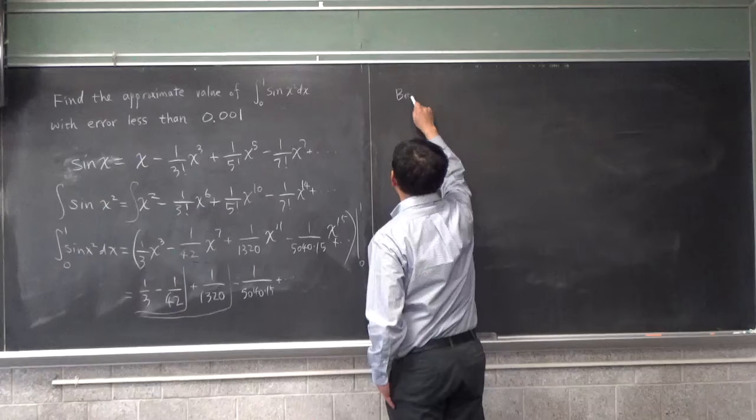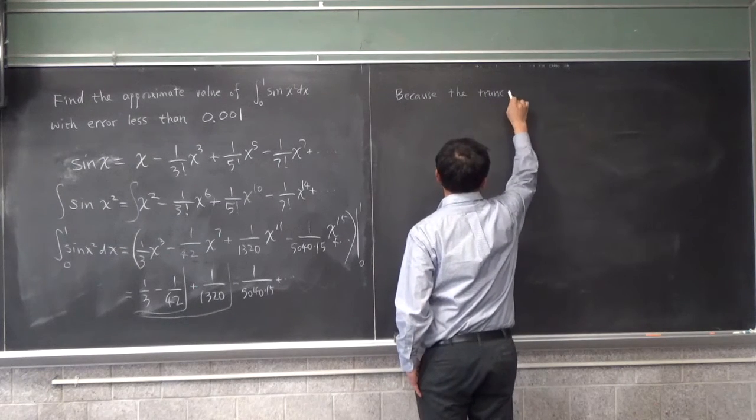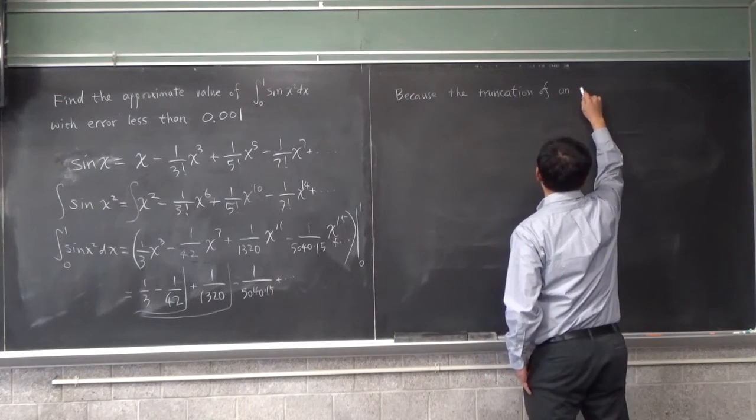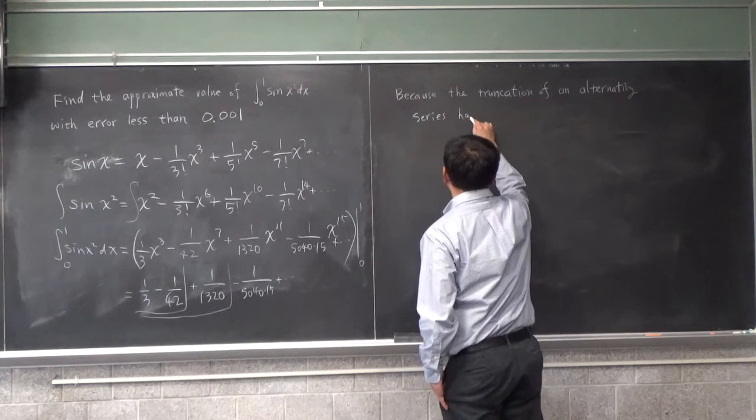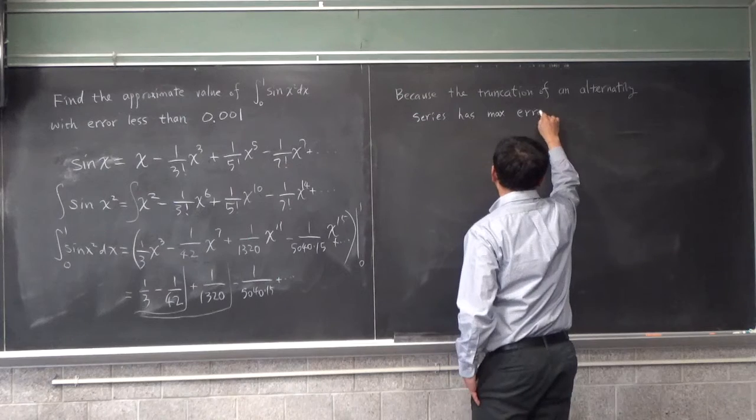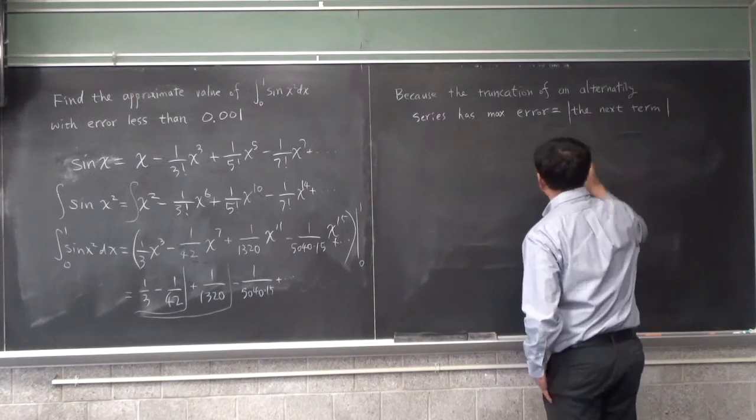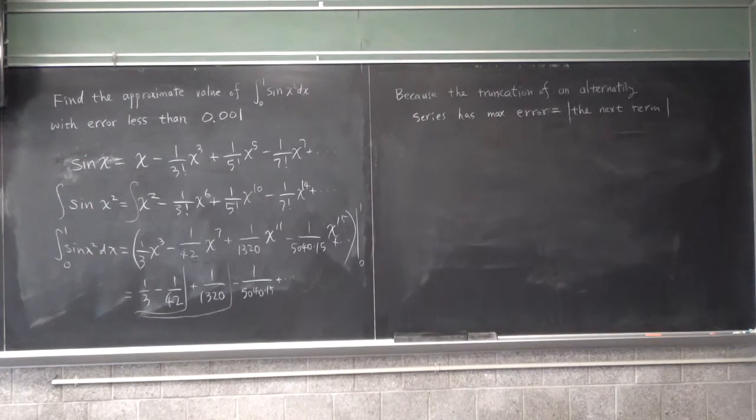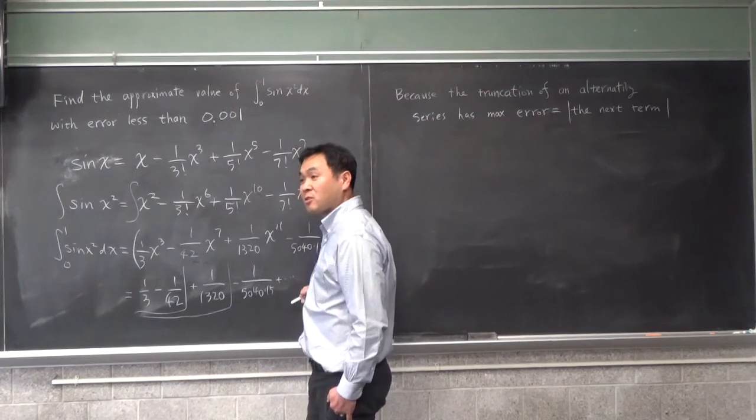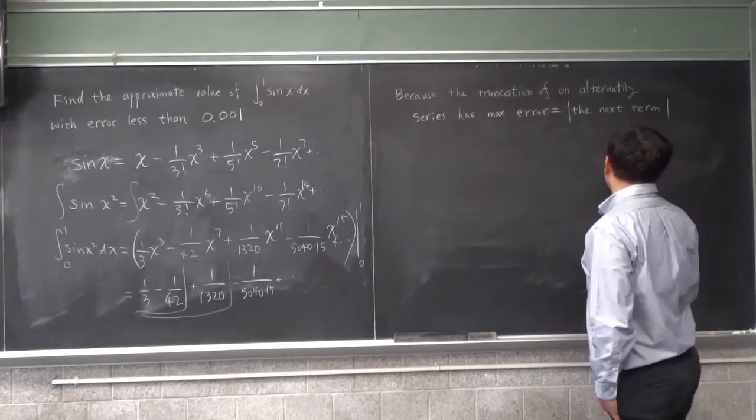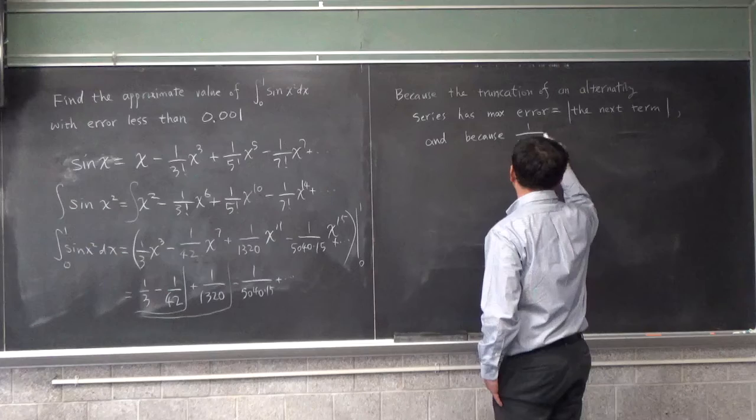So because the truncation of an alternating series has max error equal to the next term. Well, if it's negative, you have to take the absolute value. So if you truncate here, this will be your error. If you truncate here, then this will be your error. If you truncate here, then whatever that's on the left next one is your maximum error.